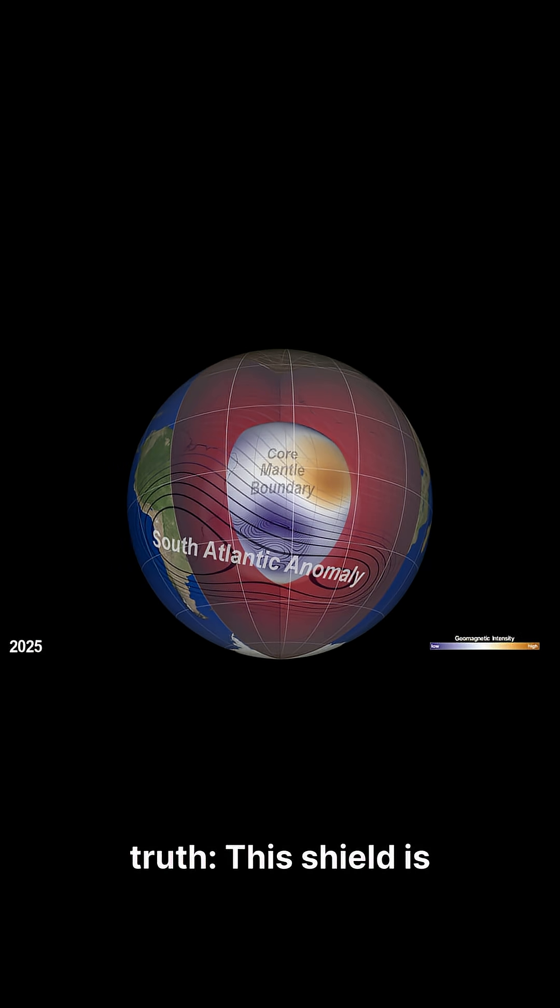But here's the scary truth. This shield is critically weakening and faster than scientists expected. One region, the South Atlantic Anomaly, has become so weak that satellites glitch, space equipment malfunctions, and even the ISS avoids flying through it.